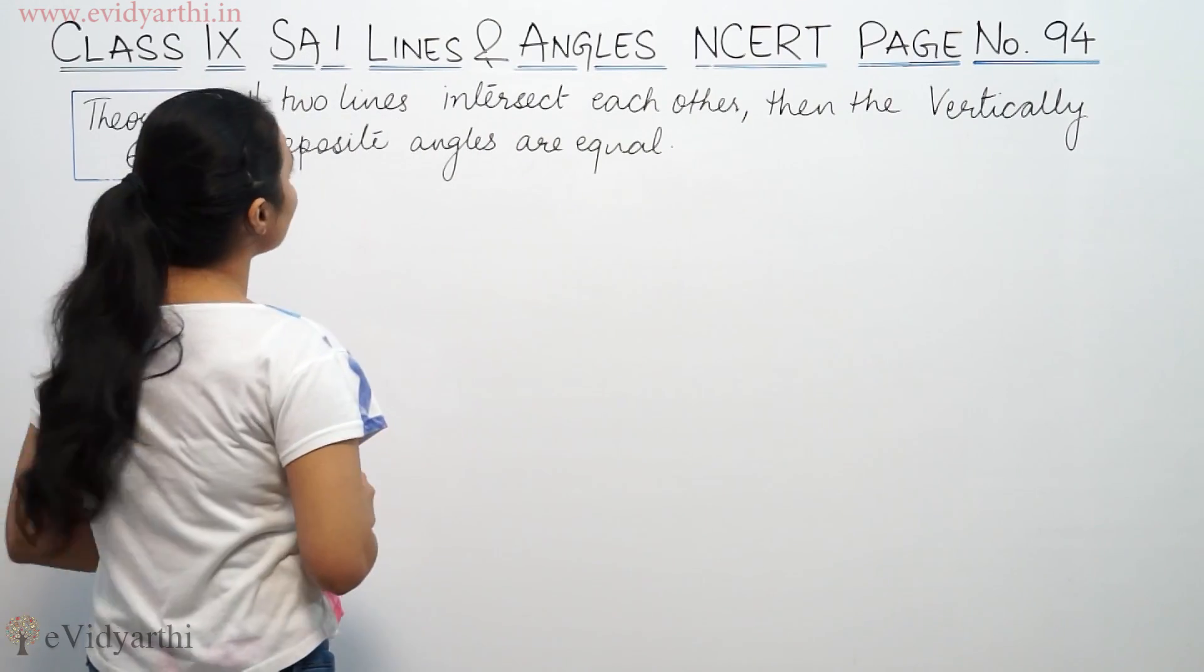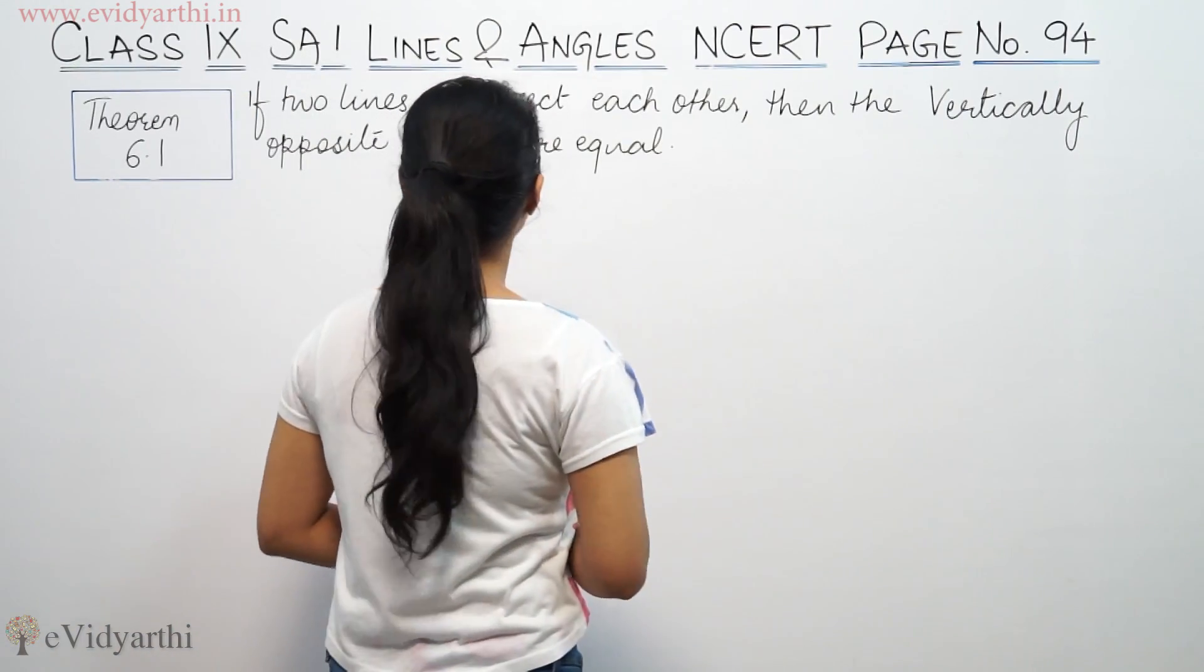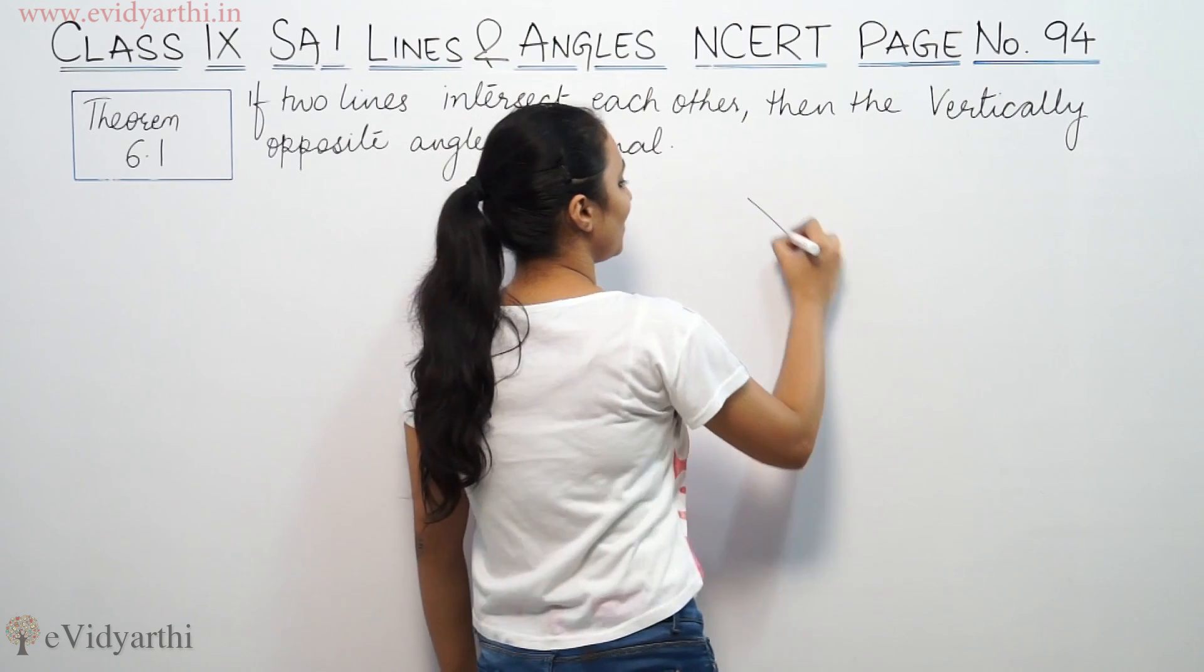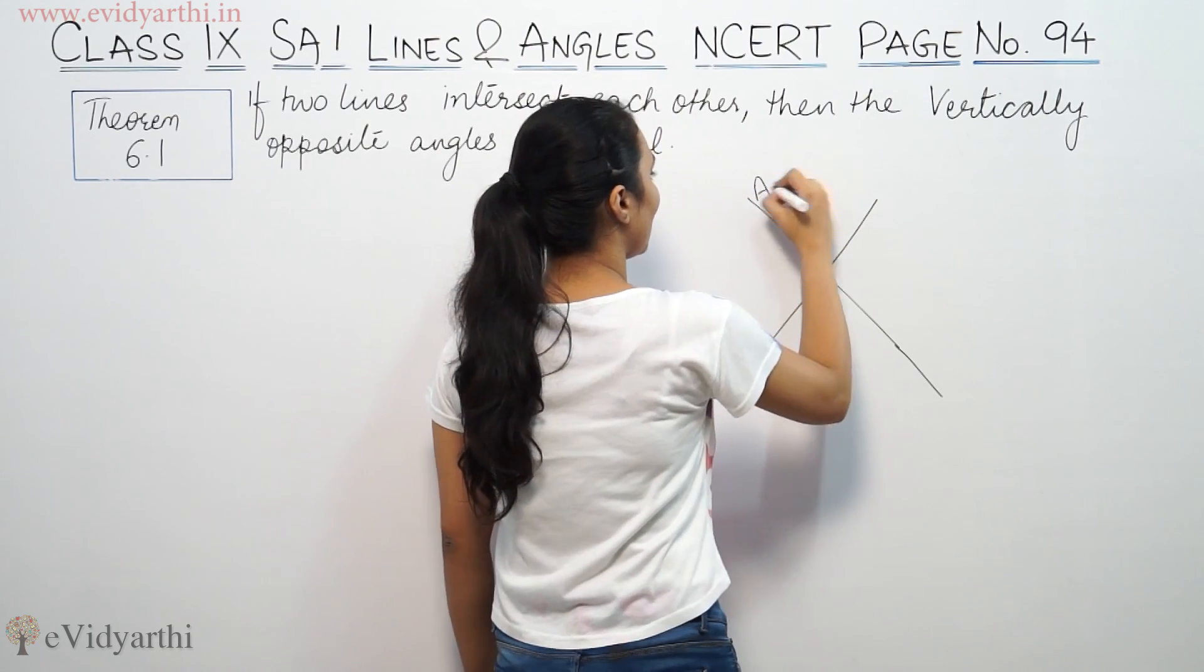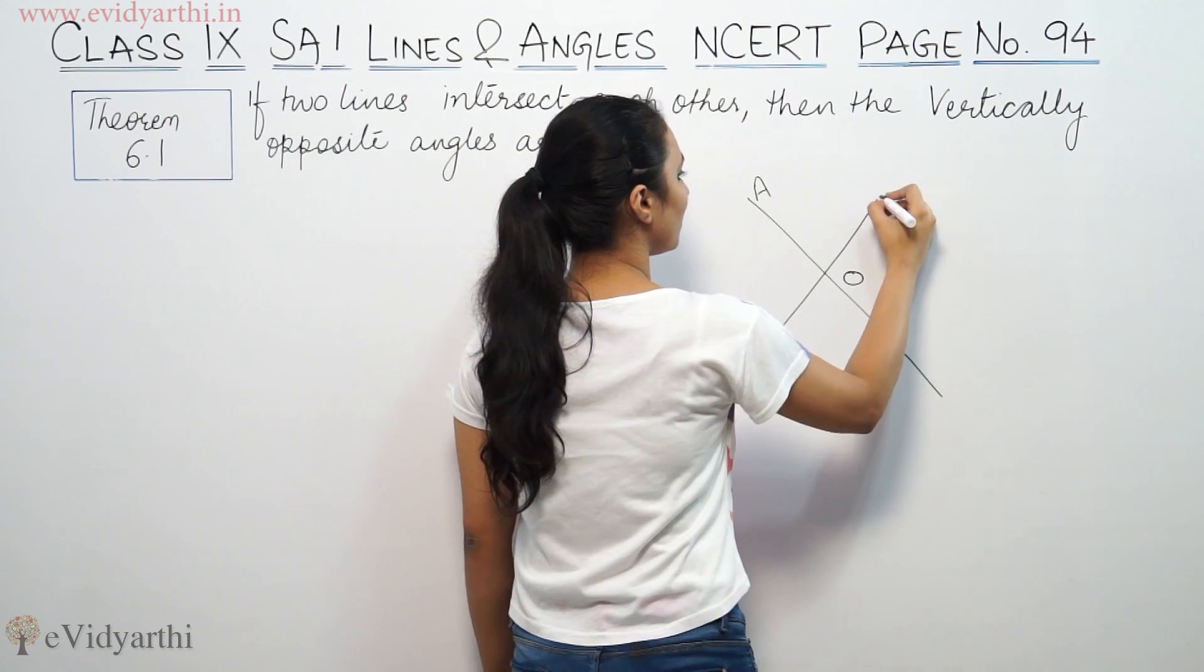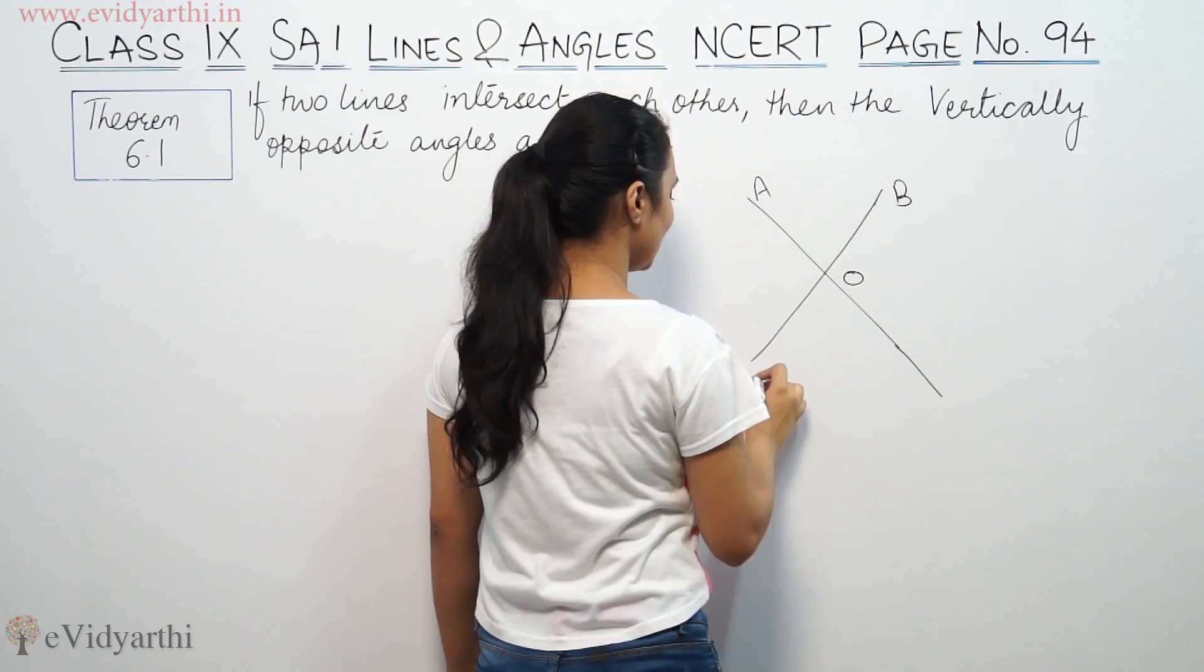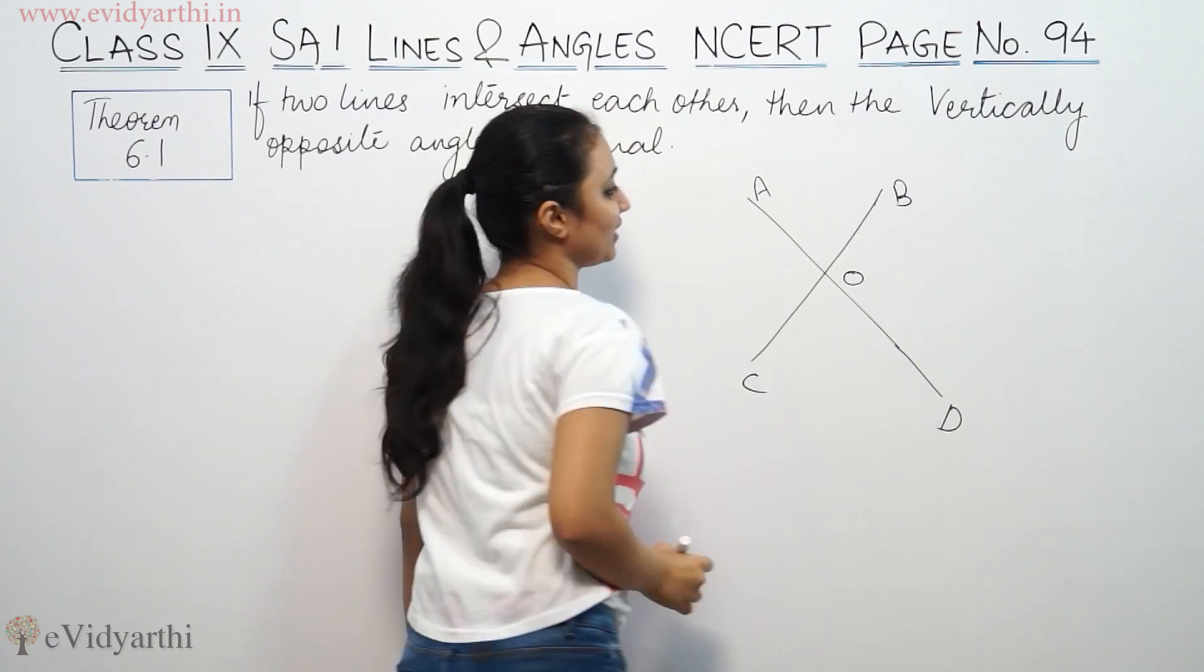This says, if two lines intersect each other, then the vertically opposite angles are equal. We have two lines, one is this. This is A, this is O, this is B, C, D. These are two lines.